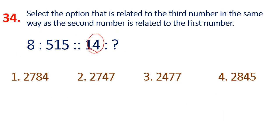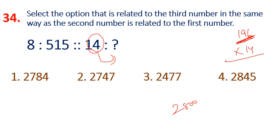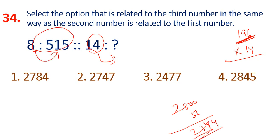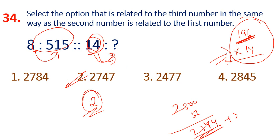14 squared is 196. 14 cubed is 2744. Adding 3 gives 2747. So option 2 is the answer: 2747. The relation is: cube the number and add 3. You can verify: 8 cubed is 512, plus 3 is 515. Then 14 cubed is 2744, plus 3 is 2747.